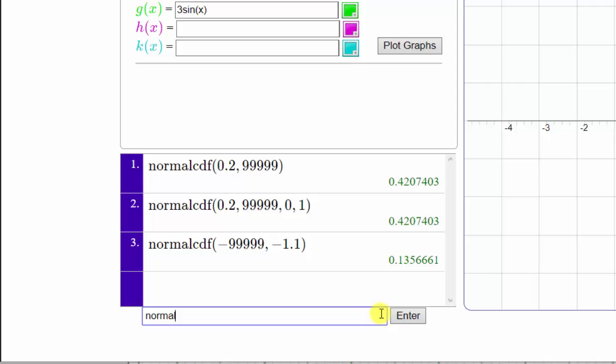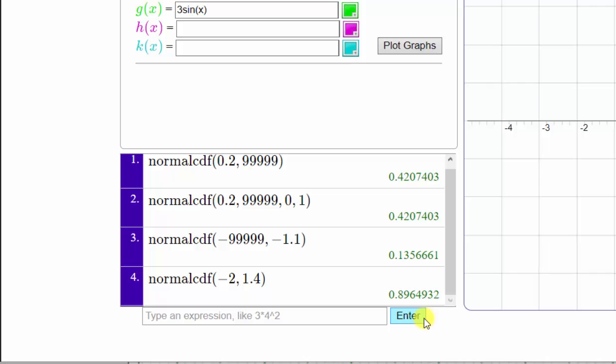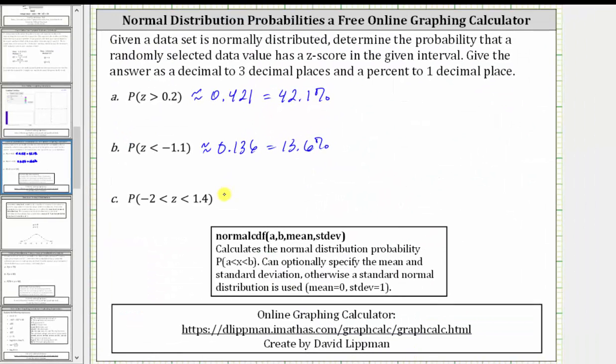Enter normalCDF, open parenthesis, negative 2, comma, 1.4, close parenthesis. Click enter. To three decimal places, we have approximately 0.896, which is equal to 89.6%.